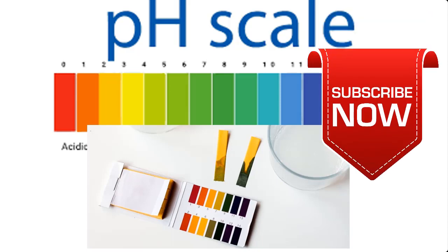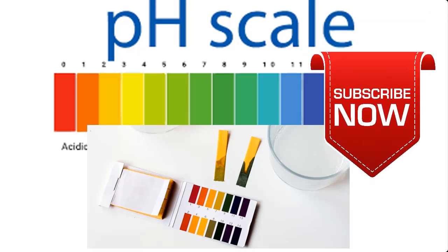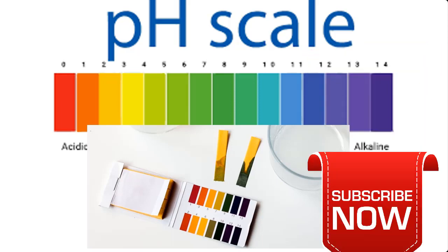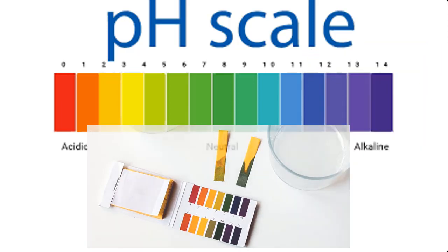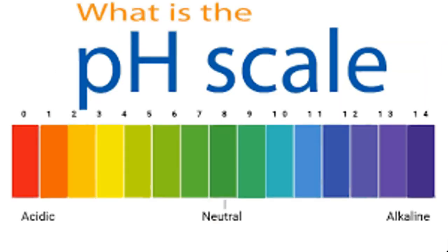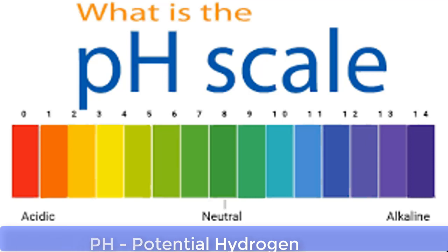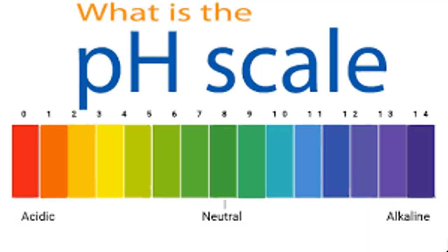Now let's continue by first knowing the meaning of pH of a solution of liquid soap. pH, which literally means potential hydrogen, is a technical term used to describe the degree of acidity or alkalinity of a solution. A solution can either be acidic, neutral, or alkaline.